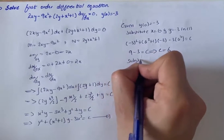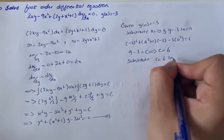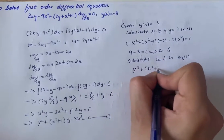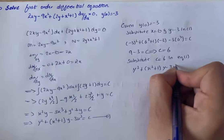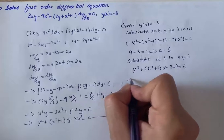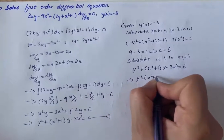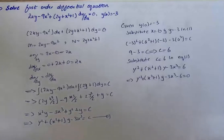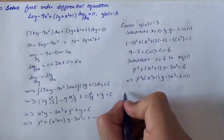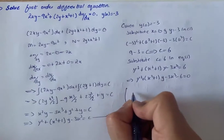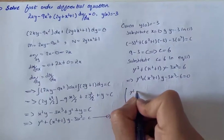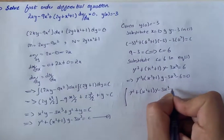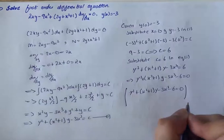Now we substitute C equals 6 into equation 1. We get y squared plus (x squared plus 1)y minus 3x cubed equals 6. On further simplification: y squared plus (x squared plus 1)y minus 3x cubed minus 6 equals 0. Therefore, the solution of the differential equation is y squared plus (x squared plus 1)y minus 3x cubed minus 6 equals 0.